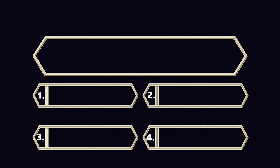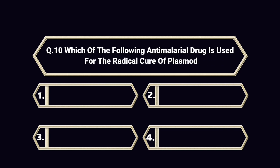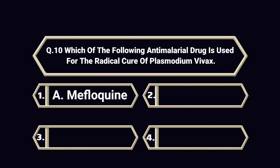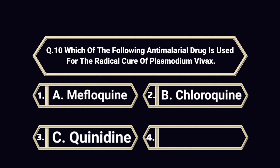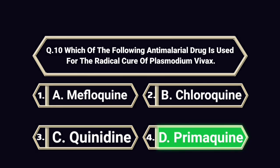Question number 10. Which of the following anti-malarial drugs is used for the radical cure of Plasmodium vivax? A. Mefloquine. B. Chloroquine. C. Quinidine. D. Primaquine. Answer is D. Primaquine.